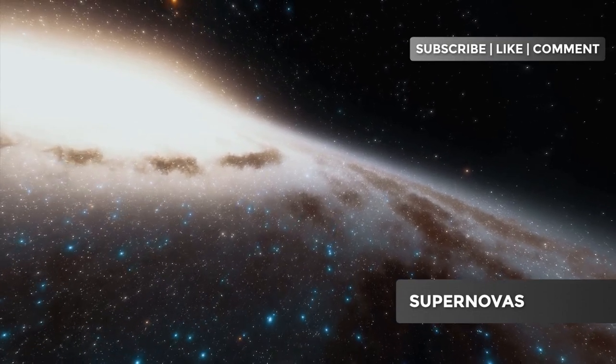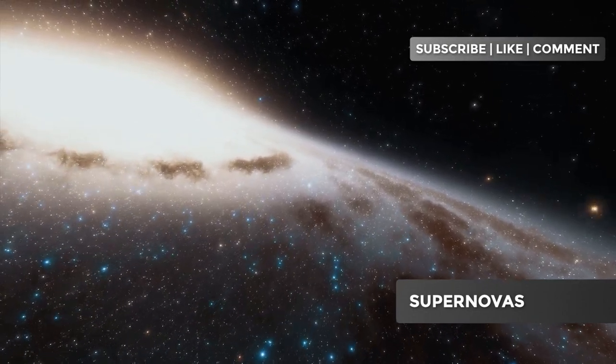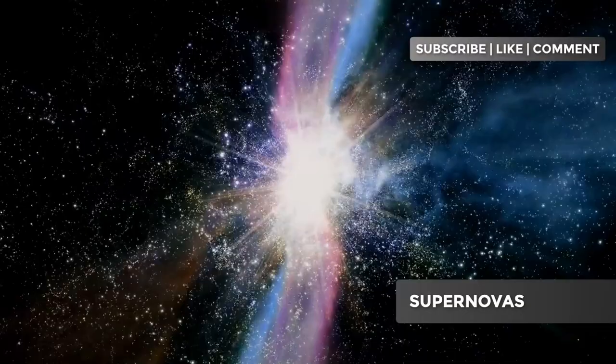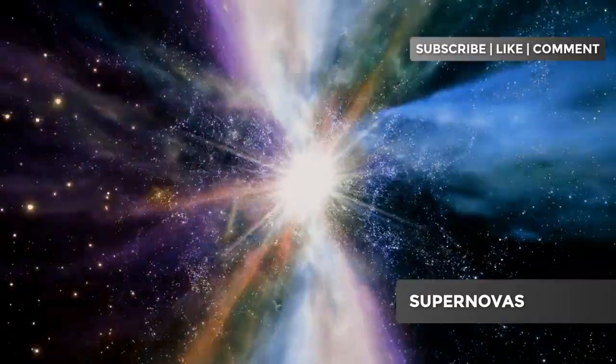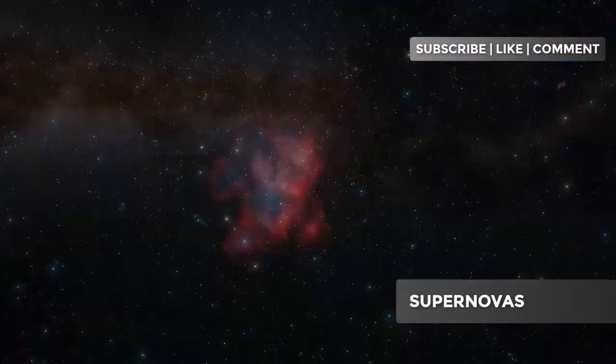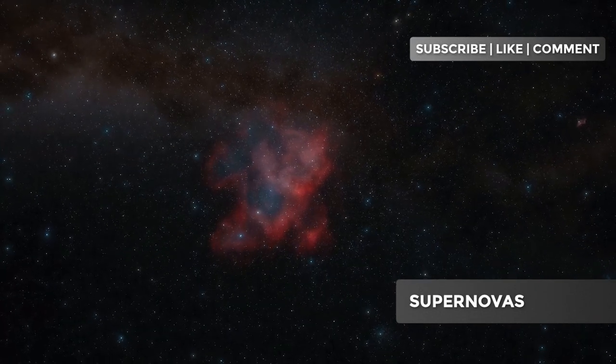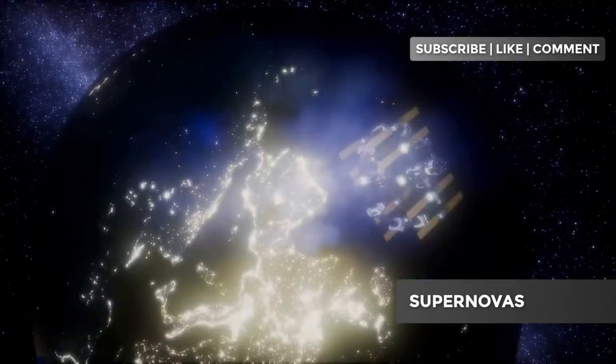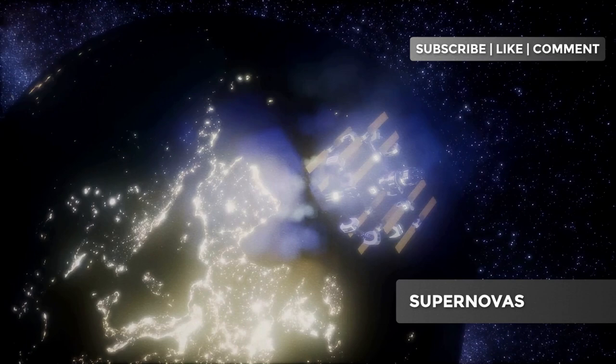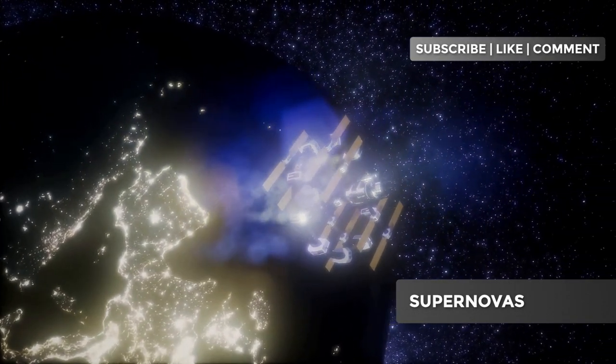A lesser known type of supernova is the type IAC supernova. These supernovas are similar to thermonuclear supernovas but occur with much less energy release. They involve white dwarfs in binary systems but the explosion does not completely destroy the white dwarf. Instead, part of the star survives and can continue accumulating matter from its companion.